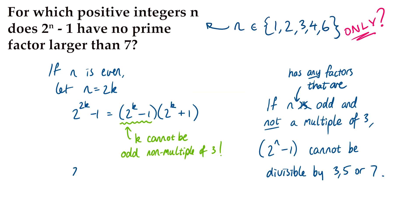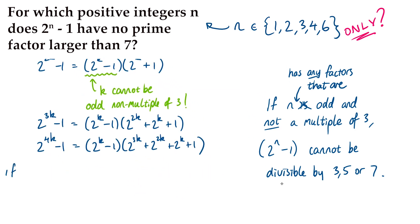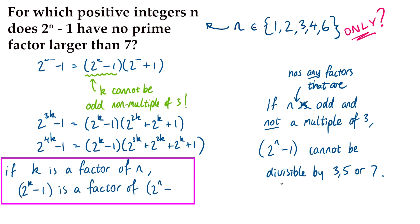And we can generalize this even further to show that if n has any factors that are odd and not a multiple of 3, then 2 to the n minus 1 would have a prime factor larger than 7. We just showed that if n is 2k, we could use a difference of squares factorization. But if n were 3k, for example, we could use a difference of cubes factorization. If n were 4k, well, we could factorize that into 2 to the k minus 1, and the other bracket would be 2 to the 3k plus 2 to the 2k plus 2 to the k plus 1. If you've never seen this before, it's not too hard to verify that it works and that it's going to keep on working for any power, because when you expand out these brackets, all the terms will cancel, except for the leading term and the minus 1 on the end. So if k is a factor of n, 2 to the k minus 1 will be a factor of 2 to the n minus 1. And as we've seen, if that k is an odd number that's not a multiple of 3, then we're going to have a prime factor larger than 7.